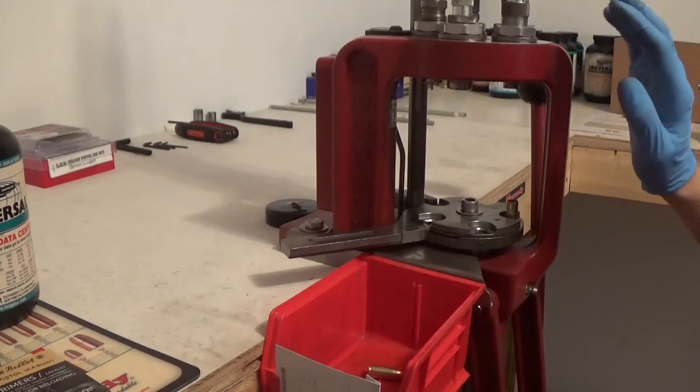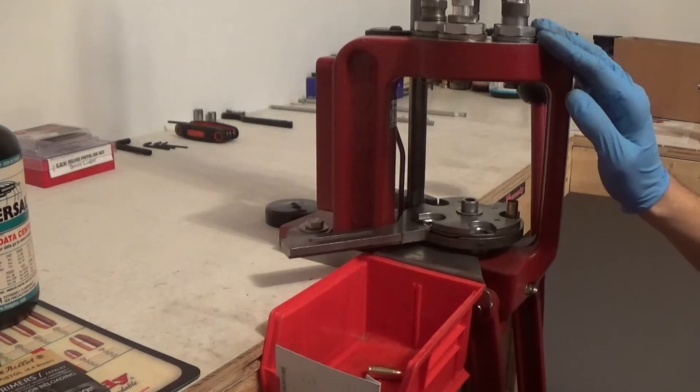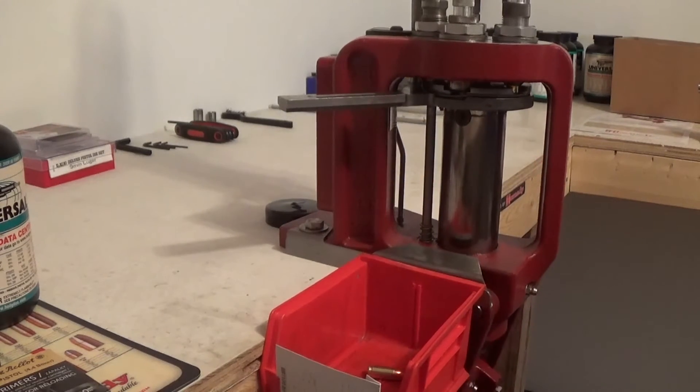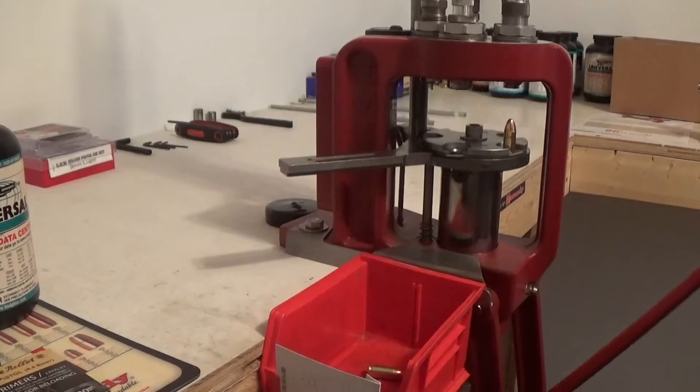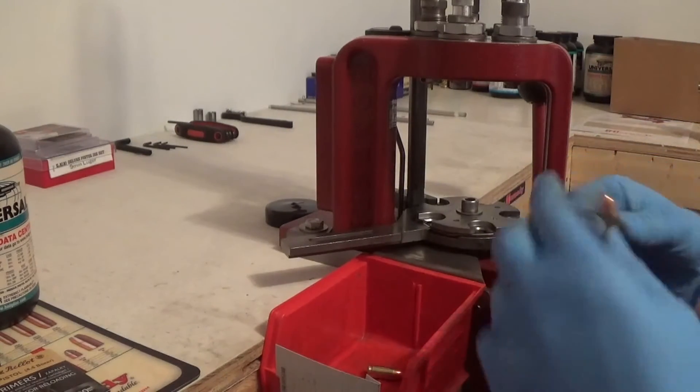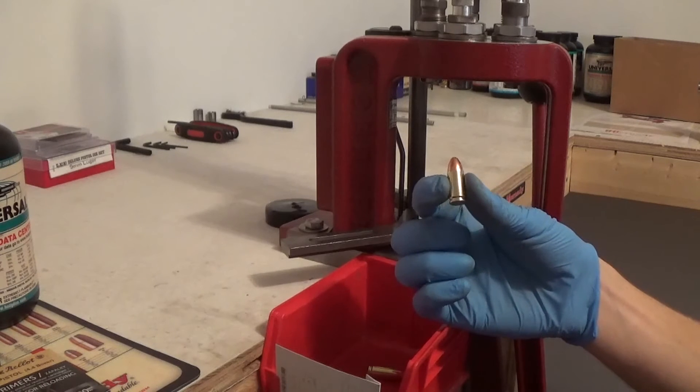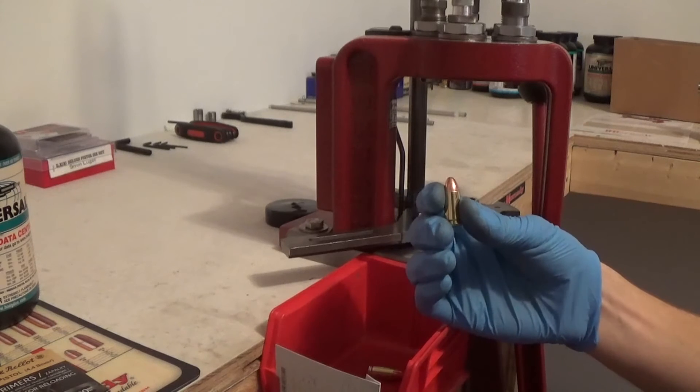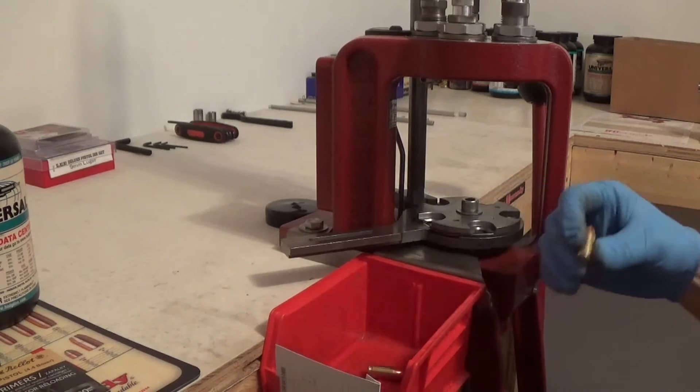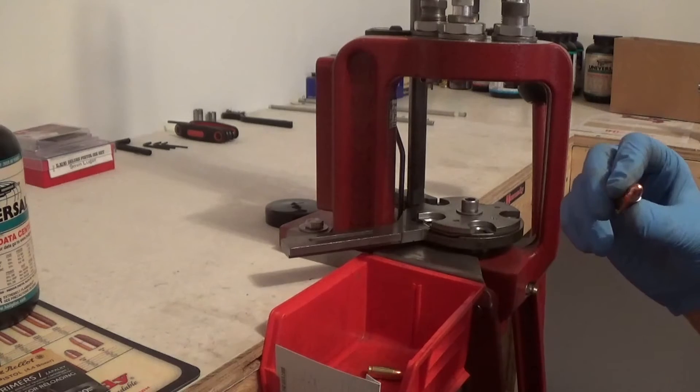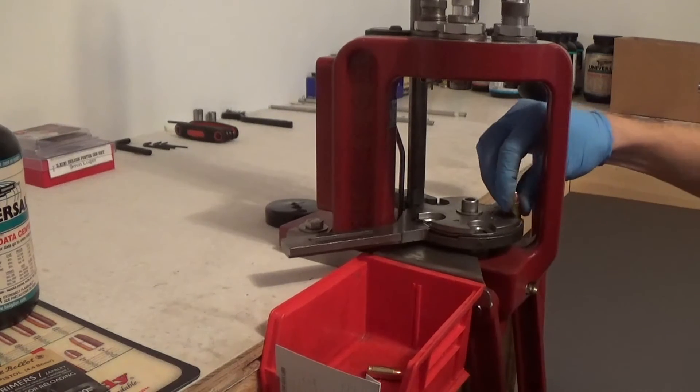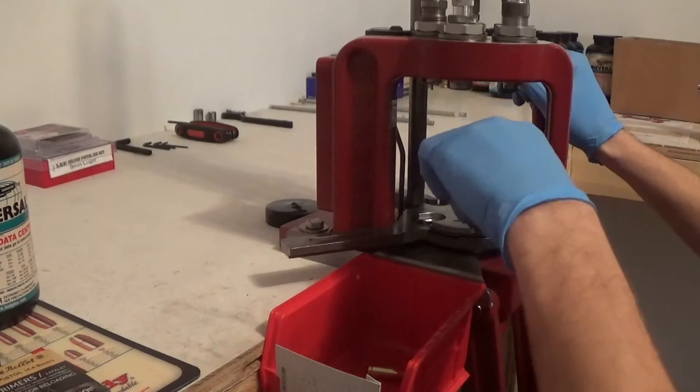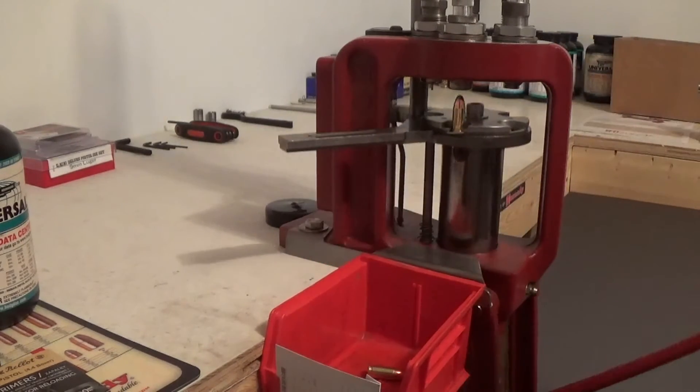Next thing is to come up and hit the bullet seating die. Now it has a bullet in it. And this bullet seating die, even though it's just a seating die, it actually pushes it in just enough to where you could probably get away without ever using your factory crimp die. But you got it, so you might as well use it just to be sure.